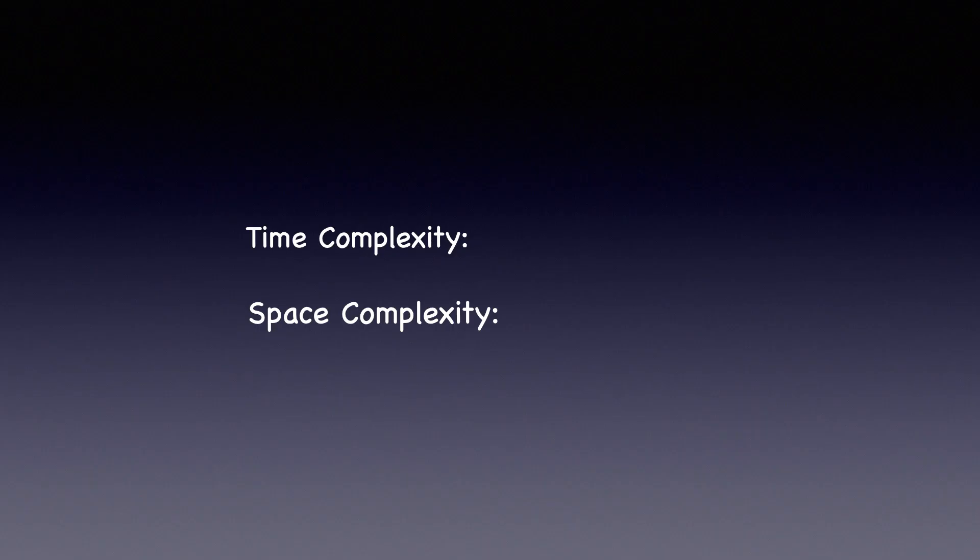So let's go over the time and space complexity. Let's say V represents the number of vertices and E represents the number of edges in the graph. The time complexity of DFS is O of V plus E because we are pretty much traversing through all the nodes and edges. And since we are recursively running DFS on each vertex, the space occupied by the function call stack will be O of V, where V represents the number of vertices in the graph.